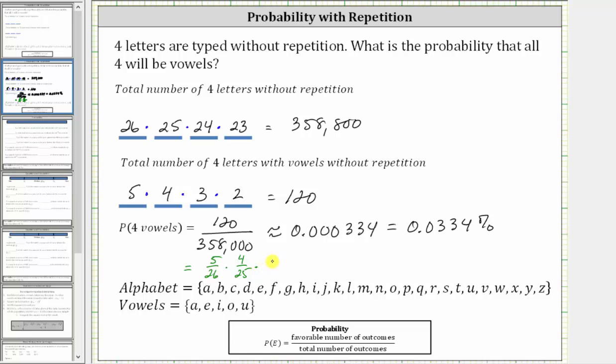The probability that the third letter is a vowel, given the first two letters are vowels, is 3/24. The probability that the fourth letter is a vowel, given the first three letters are vowels, is 2/23.